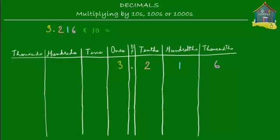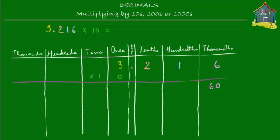We want to multiply this number by 10. When you multiply one number by another, you take every single digit of the first number and multiply it by the second number. So 3.216 times 10 means I multiply 6 by 10, then 1 by 10, then 2 by 10, then 3 by 10. So 6 thousandths times 10 is 60 thousandths — we put that under the thousandths column.